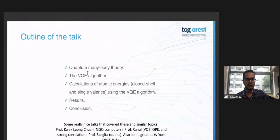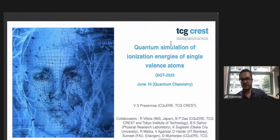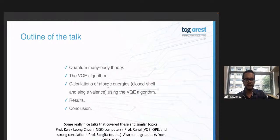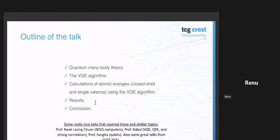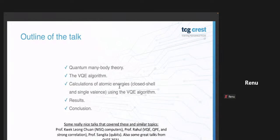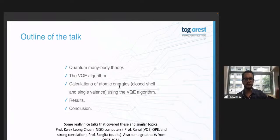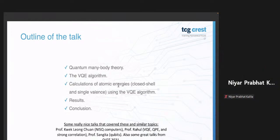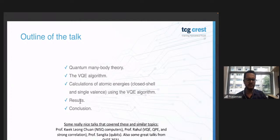Once that's done, we discuss the VQE algorithm, because it is in the context of the VQE algorithm that we actually want to find the ionization energy of atoms that contain one unpaired electron in their outer shell — that's what I mean by single-valence atoms. We'll then introduce VQE and look at calculations of atomic energies. Since these are ionization energies, we do two calculations: one for the single-valence atom and one for its closed-shell counterpart, and look at their trends.